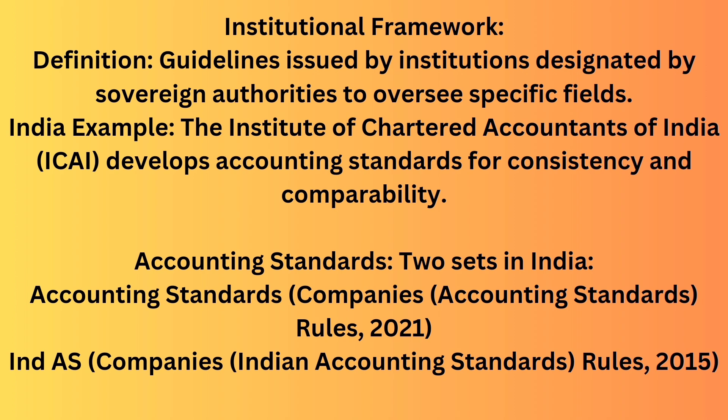The Indian Accounting Standards Board of ICAI is like a committee that writes down these rules — they are the ones making the rules. They create high quality accounting standards that cover different areas of accounting, just like a rule book covers different parts of a sport. There are two main sets of accounting standards in India. One is accounting standards as per Companies Rules 2021. Another one is Indian Accounting Standards under Companies Rules 2015. These rule books tell businesses how to keep their financial records so that everyone can compare and understand their performance easily.